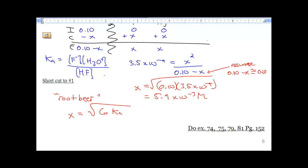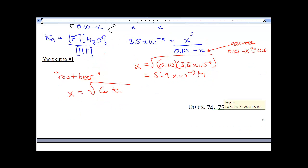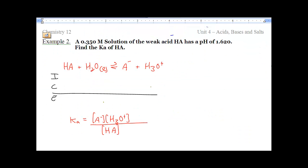It's dumb but it works and you'll remember it. Question number two: change it up a little bit. 0.35 molar solution, that's your initial concentration of a weak acid. It tells us it's a weak acid HA and has a pH of 1.62. That's your X. We need to find the Ka.